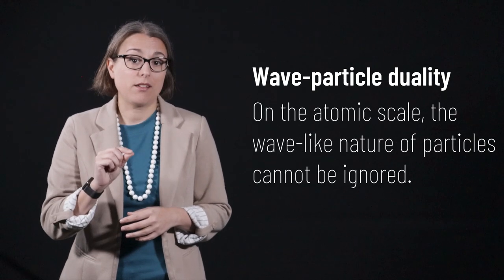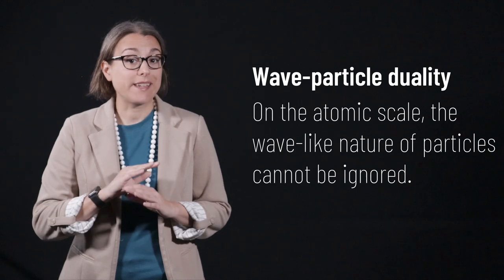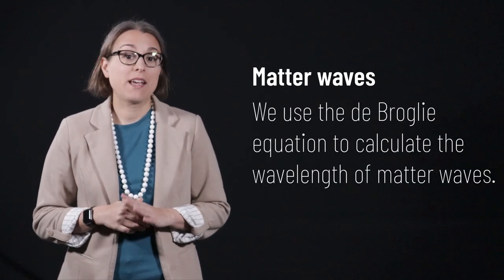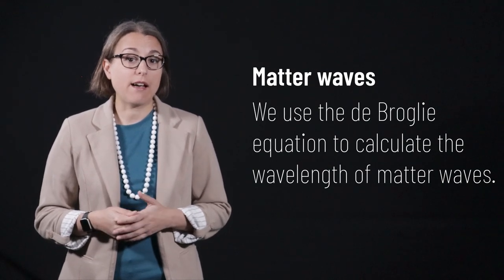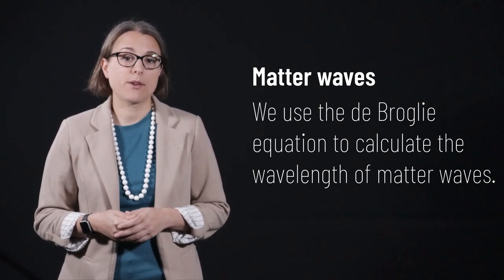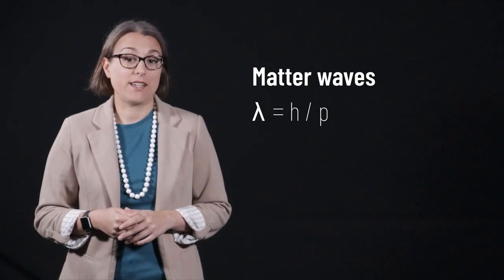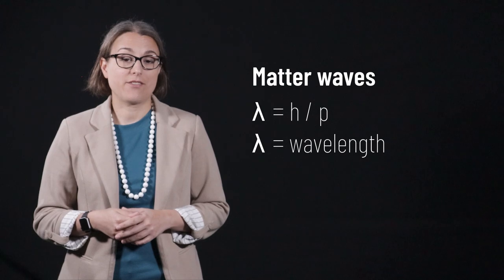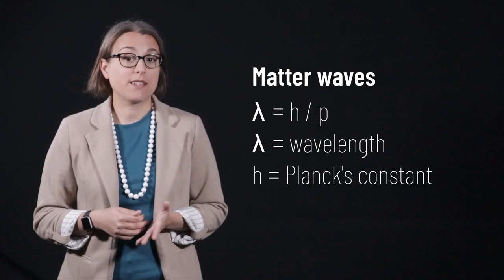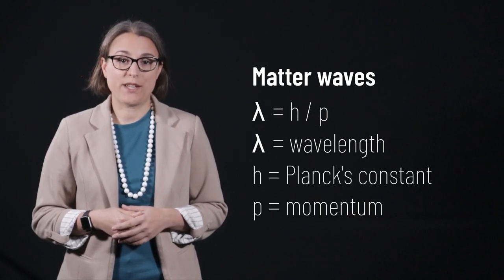On the atomic scale, the wave-like nature of particles cannot be ignored. Matter waves were proposed by de Broglie, and we use the de Broglie equation to calculate the wavelength of matter waves. The de Broglie equation states that lambda equals h divided by p, the wavelength of a matter wave, is equal to Planck's constant divided by the momentum of the object.